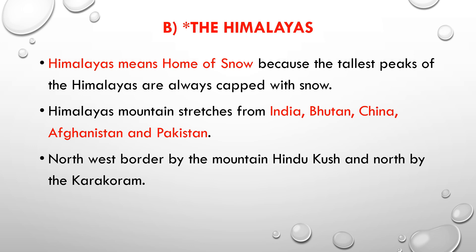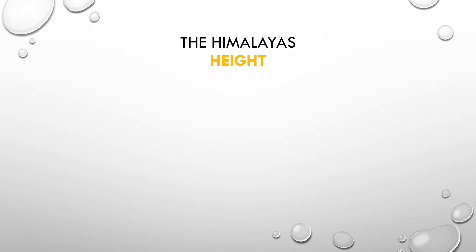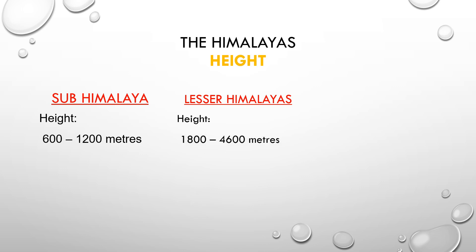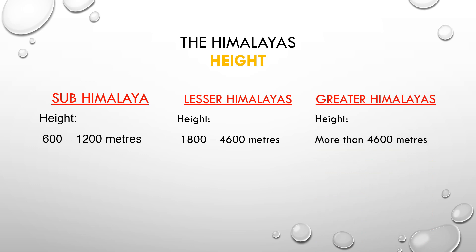The Himalaya mountains stretch across India, Bhutan, China, Afghanistan, and Pakistan. The northwest border of the mountains meets Hindu Kush and the north meets the Karakoram. The Himalaya mountains have three types based on height: Sub-Himalaya with a height of 600 to 1,200 meters, Lesser Himalaya with a height of 1,800 to 4,600 meters, and Greater Himalayas with a height of more than 4,600 meters.